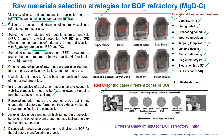Recycled material may be another choice, but it may change the refractory performance, so exhaustive trials are required to finalize the composition. Extensive understanding of high temperature corrosion behavior and other relevant properties may facilitate picking the right composition. Discuss with the production department to finalize the SOP for the refractory manufacturing protocols.